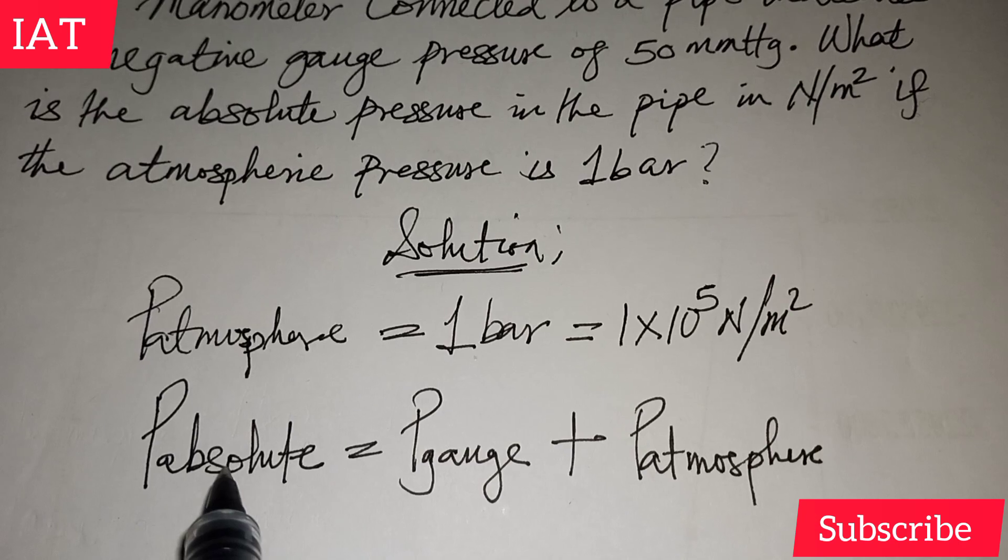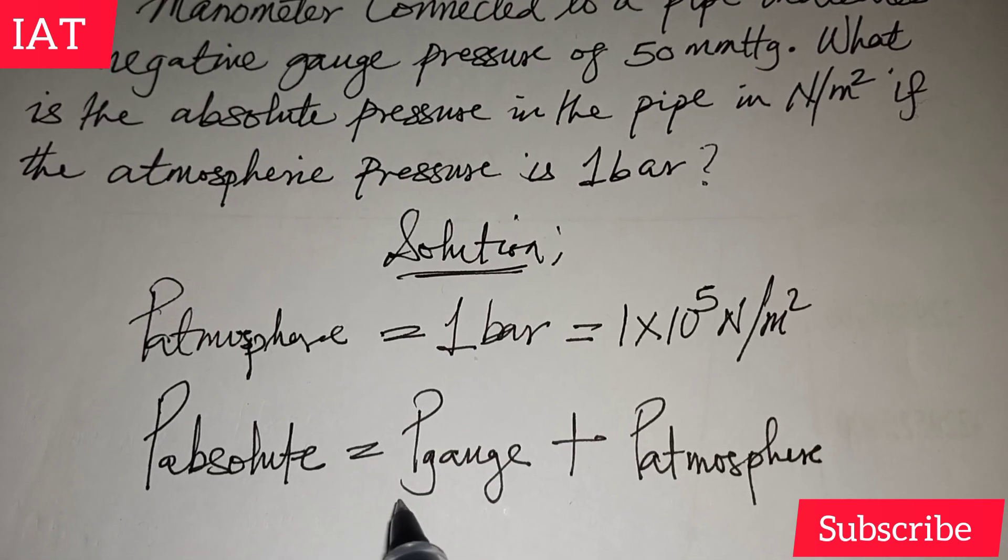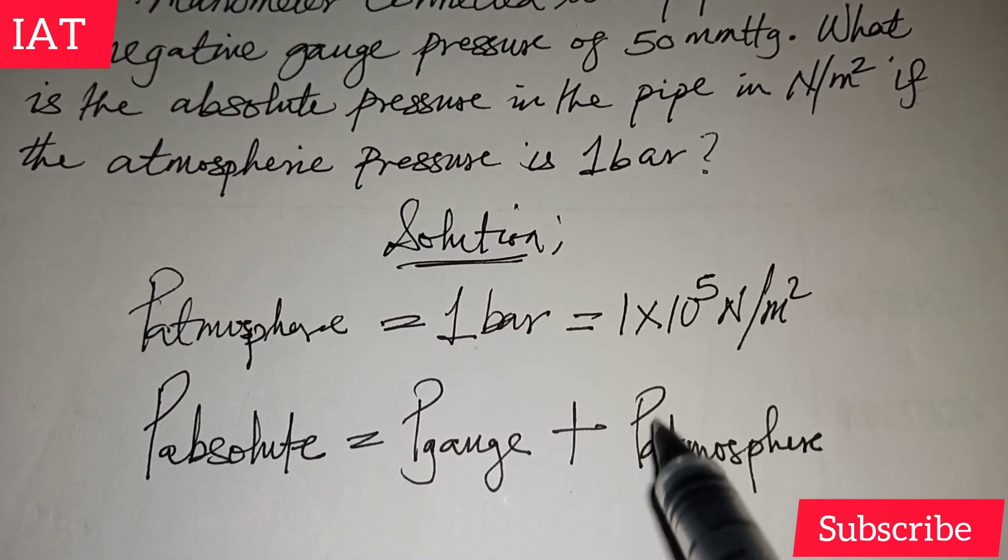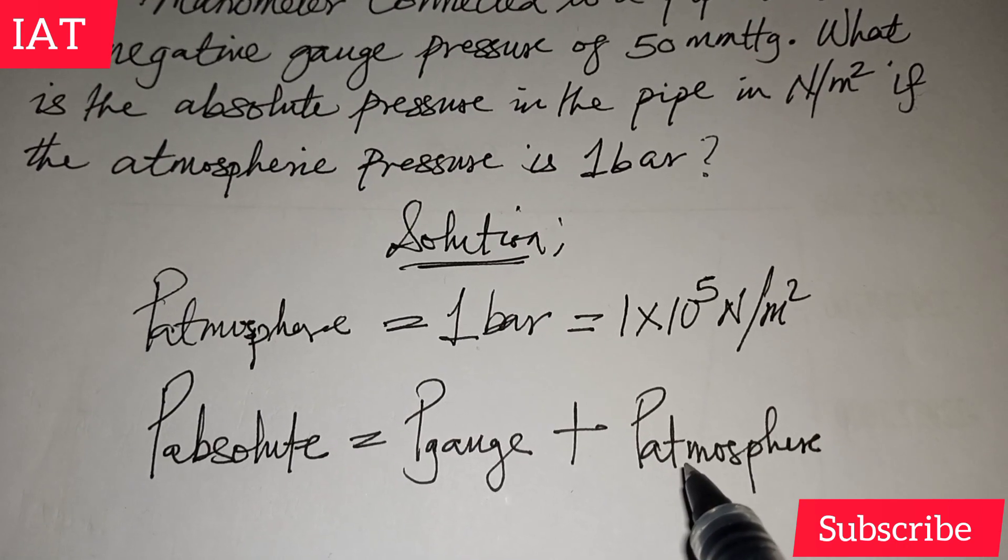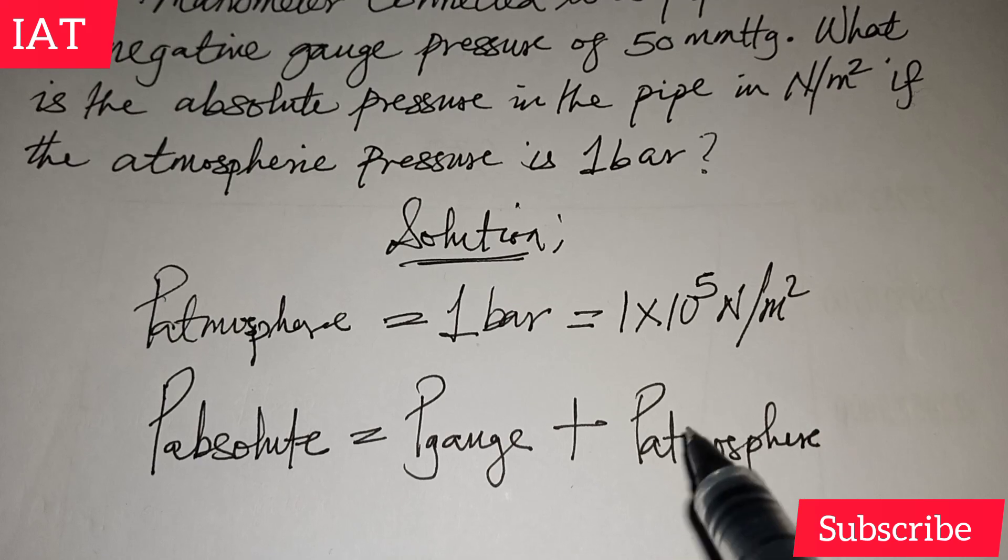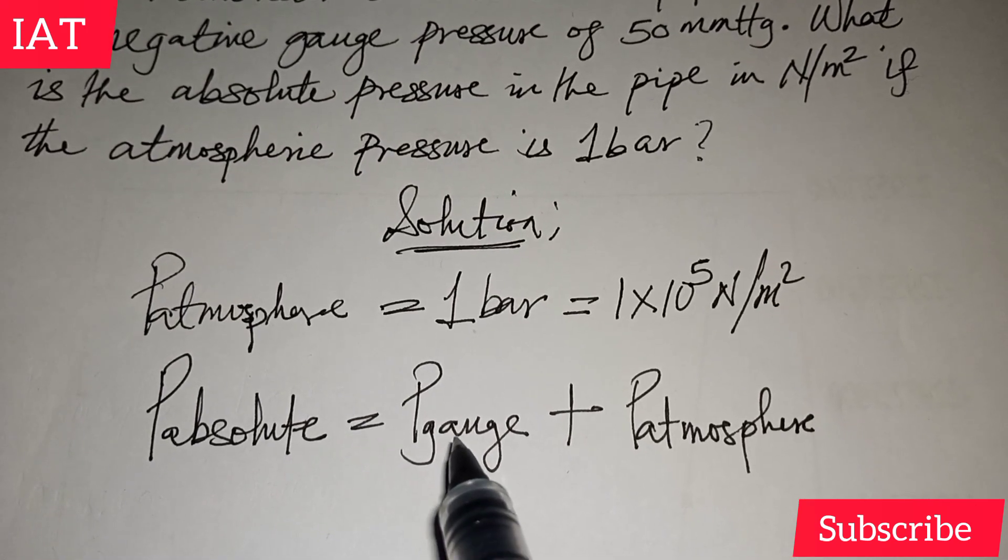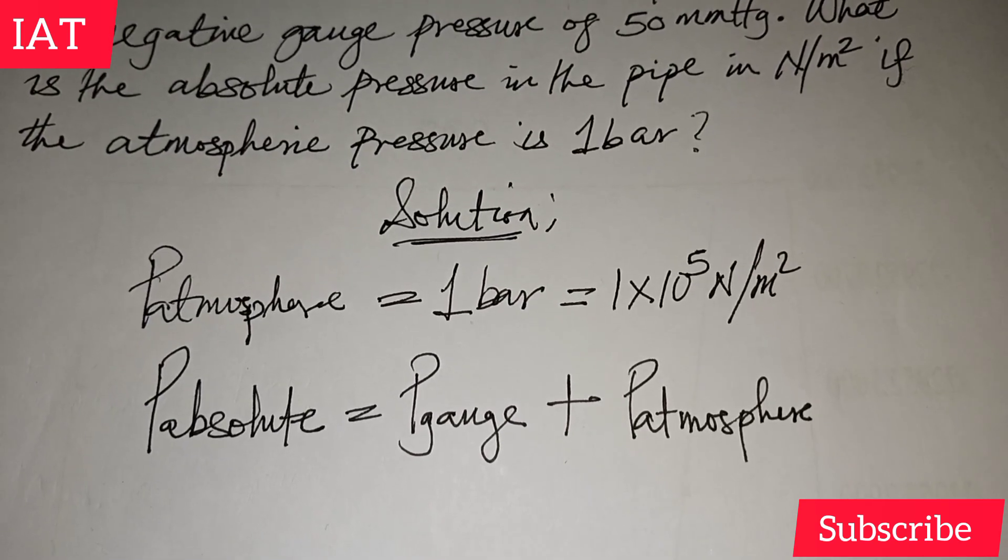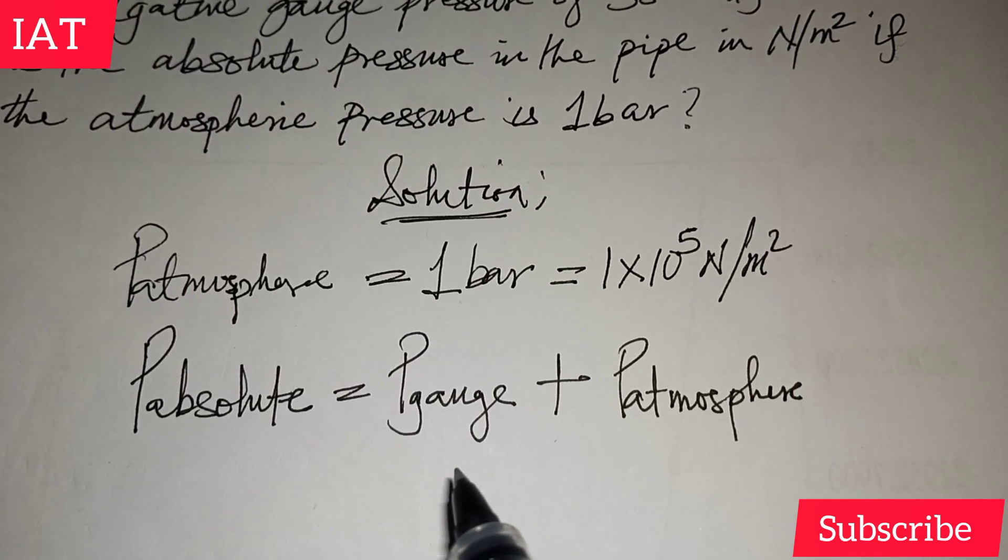This is the formula that connects it. In some cases you see it written as P_abs, that's the short form for absolute. You see some cases you write P_G, that is the gauge pressure. And then some cases you see P_atm, that is the atmospheric pressure. Sometimes this atmospheric pressure can be written P_0.